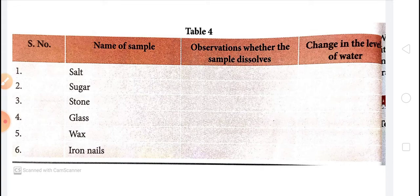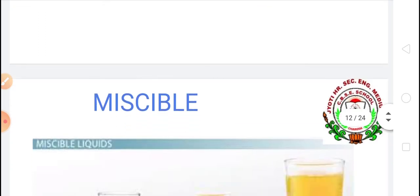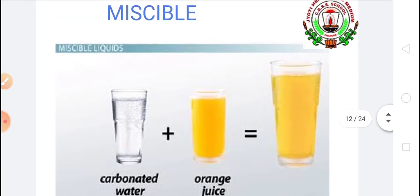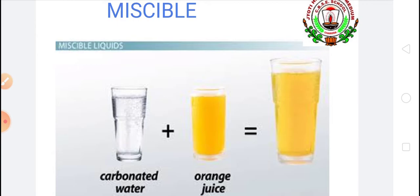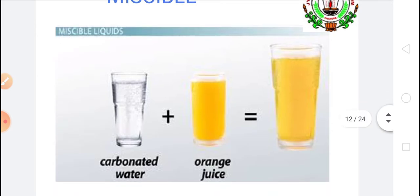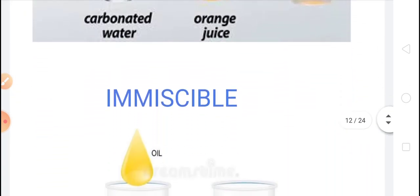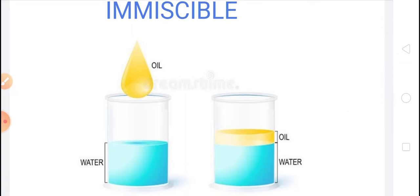This activity can also be extended to other liquid samples such as milk, vinegar, lemon juice, mustard oil, coconut oil, paints, etc. Liquids which can completely dissolve in water are called miscible — like lemon juice, milk, and vinegar. Orange juice is also miscible in water. Oil is immiscible in water; oil floats on the water, so we say that oil is immiscible.